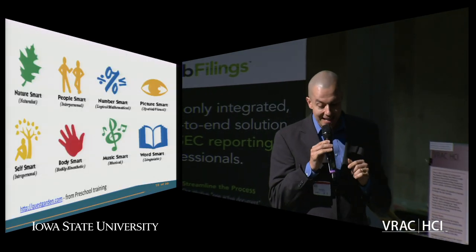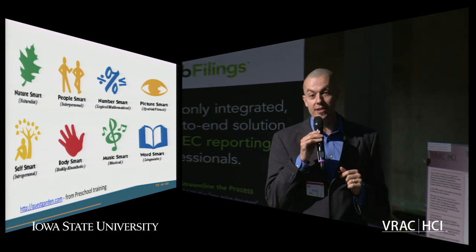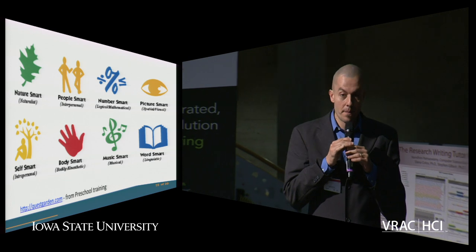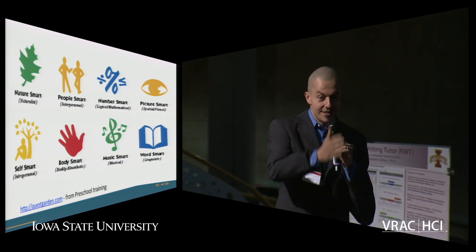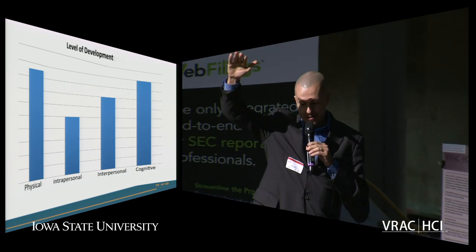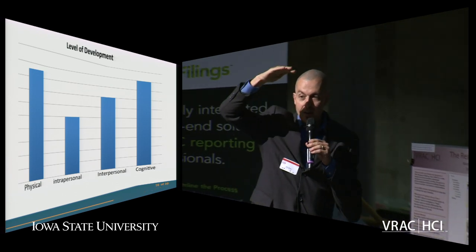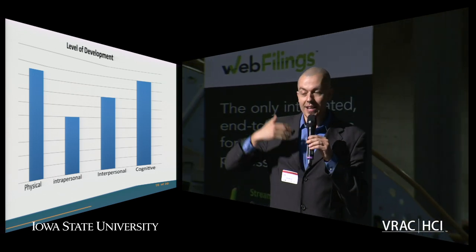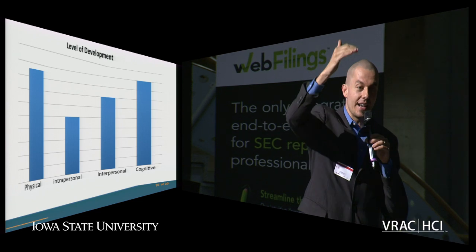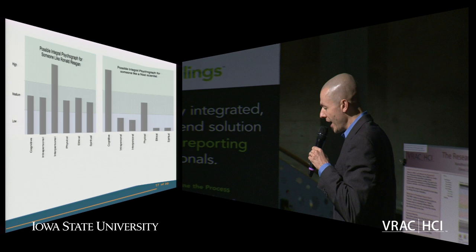The next model is Lines and Levels. Lines and Levels is built on the theory of multiple intelligences — Howard Gardner's work. There are lines of development, and there are levels on those lines. You can have physical development, interpersonal development, intrapersonal development, cognitive development — and you can have levels of development on each of those lines. This tool allows you to work with people in a more sophisticated way.